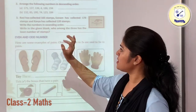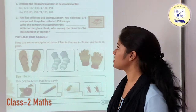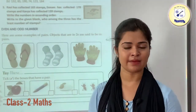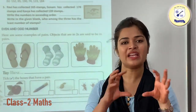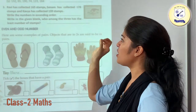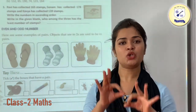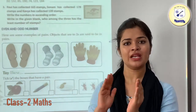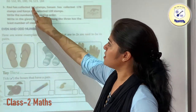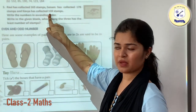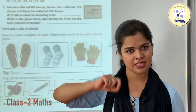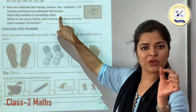The third question: Ravi has collected 165 stems, Sonam has collected 178 stems, and Kavya has collected 139 stems. Write the numbers in ascending order — arrange from smaller to bigger. Since the hundreds place is the same, we check the tens place: it is 3, 7, and 6. So the smallest is 139. We write 139 first.